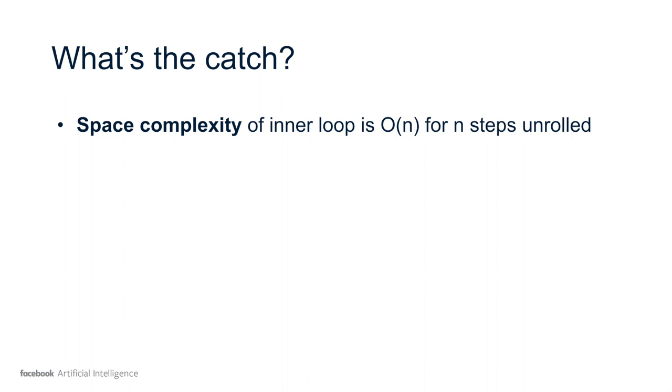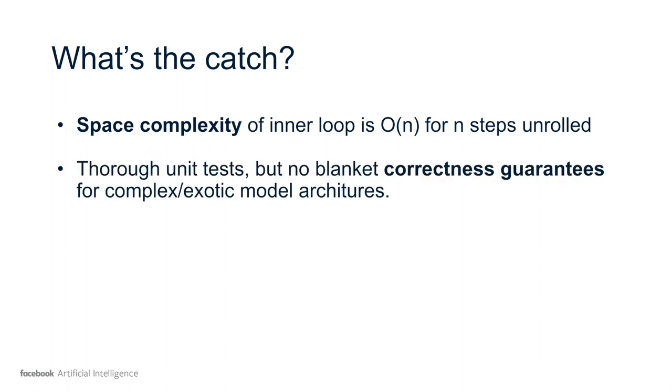So what's the catch? Well, inherent to this entire class of meta-learning algorithms, there's a space complexity attached with unrolling your training loop, which is O(n) for n steps unrolled. You can get around this with things like gradient checkpointing, which is not supported out-of-the-box for this library due to how it's implemented in core PyTorch, but a manual implementation of gradient checkpointing could be done.